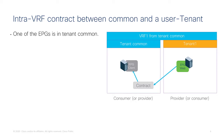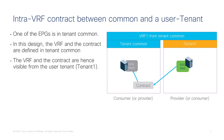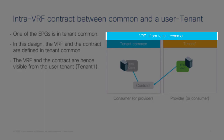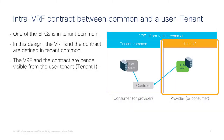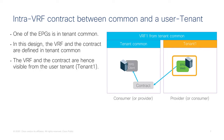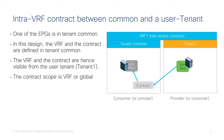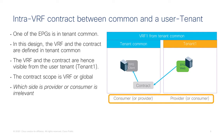Let's start from the simplest possible scenario: an intra-VRF contract between two tenants where one of them is tenant common. You define a VRF in tenant common — VRF1 — which is visible from tenant 1, and EPG web is associated with a BD that is associated with VRF1. The contract is defined within tenant common with a scope of either VRF or global. Which side is provider or consumer is irrelevant. The configuration is the same as a normal intra-tenant configuration — nothing special here.